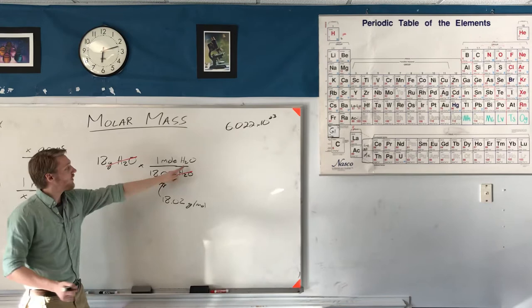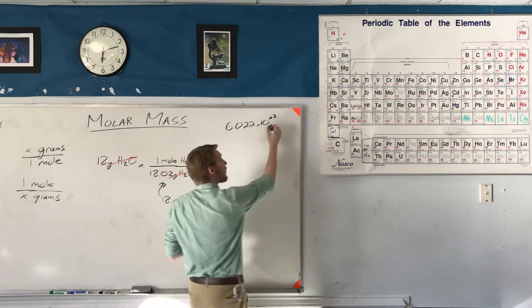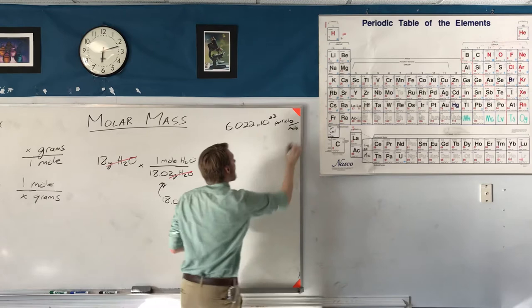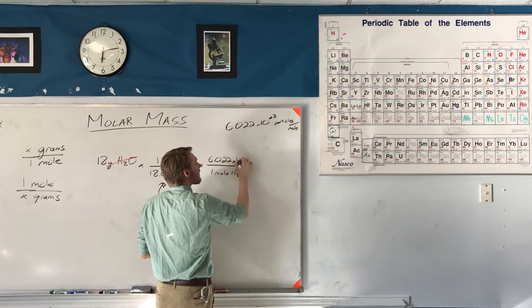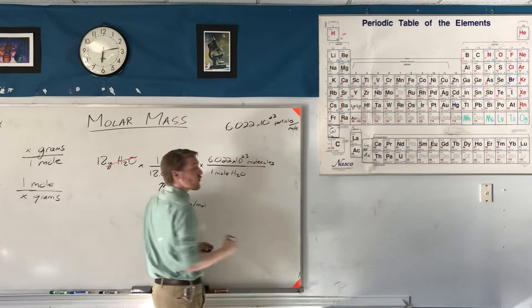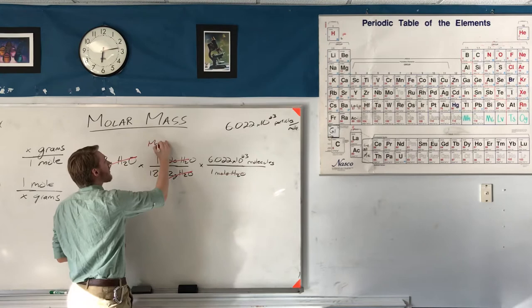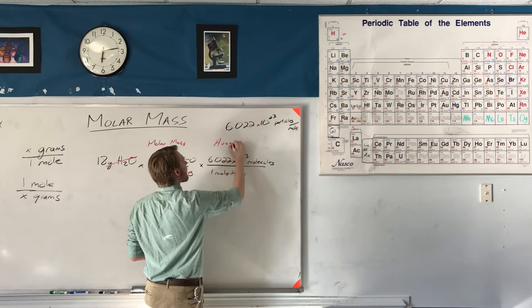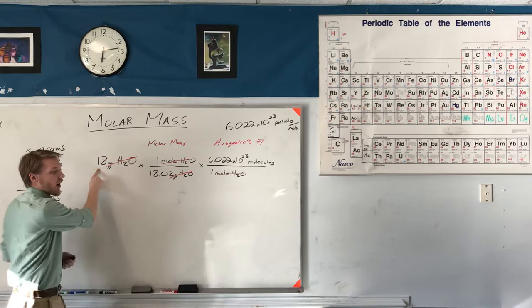Now that I have moles of H₂O, I want to know how many molecules there are. I multiply by Avogadro's number — the units are particles per mole — so in every one mole of water I have 6.022 times 10 to the 23rd molecules. This tells me exactly how many molecules of water I have. I used two conversion factors: the molar mass and Avogadro's number.